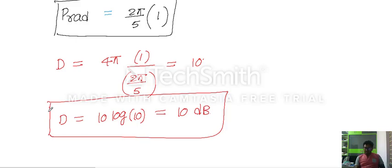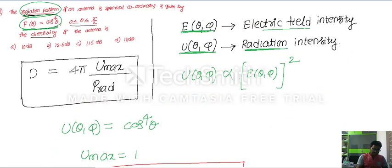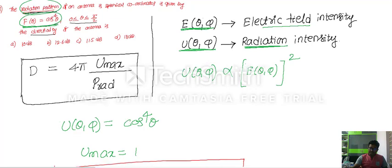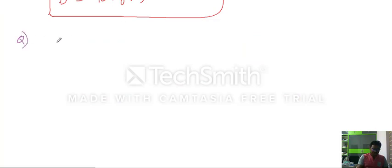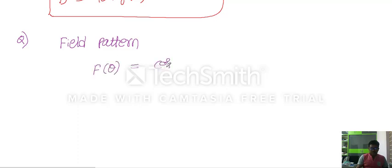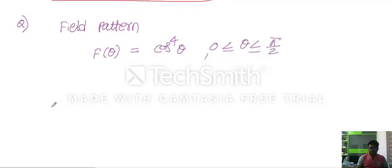Now let's consider a modified version of the same problem. Suppose instead of 'radiation pattern,' the problem states 'field pattern': f(θ) = cos⁴θ for 0 < θ < π/2. In that case, this is a field pattern, so we treat it as electric field intensity.